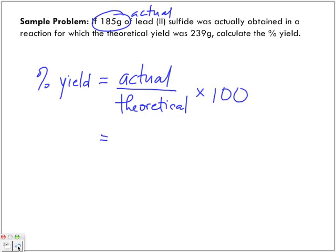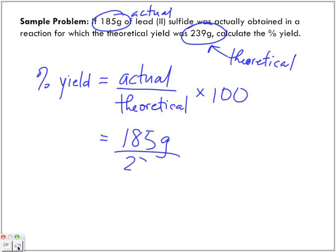There's the actual 185 grams. The theoretical is 239, so we get 185 grams divided by 239 grams. Grams cancel out, so we have no more units.